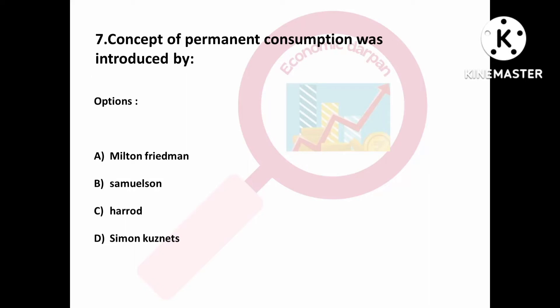Question number seven is: the concept of permanent consumption was introduced by — Option A: Milton Friedman; Option B: Samuelson; Option C: Harrod; Option D: Simon Kuznets. Milton Friedman has introduced the concept of permanent consumption.